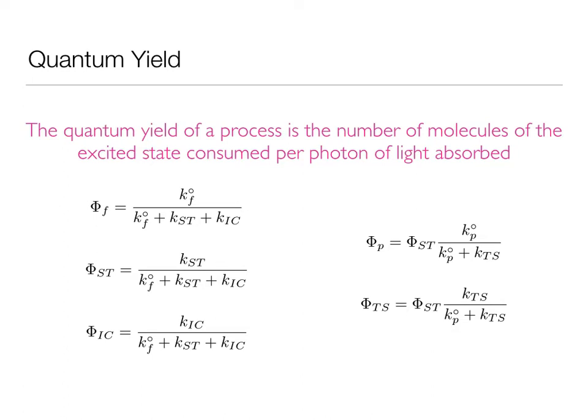Consequently, if Kf is very large compared to the other rate constants, Kst and Kic, I'm going to expect a very large quantum yield, something approaching one. Whereas if Kf is very small, I'm going to expect a quantum yield which is equally very small.